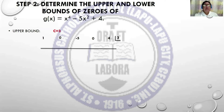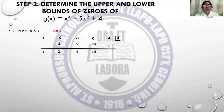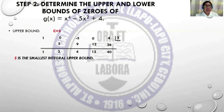Using synthetic division, bring down 1. 1 times 3 is 3. Combine 0 and 3 is 3. 3 times 3 is 9. Combine -5 and 9 is positive 4. 4 times 3 is 12. 0 plus 12 is 12. 12 times 3 is 36. 4 plus 36 is 40. So 3 is the smallest integral upper bound because all the coefficients are positive.